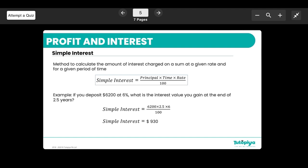Principle being how much you initially invest. If you look at the example below, you can see that they are depositing $6,200, 6% interest rate, and we're looking at 2.5 years as the time. Therefore, using the formula, that is simply just $6,200 times 2.5 years times 6 over 100.